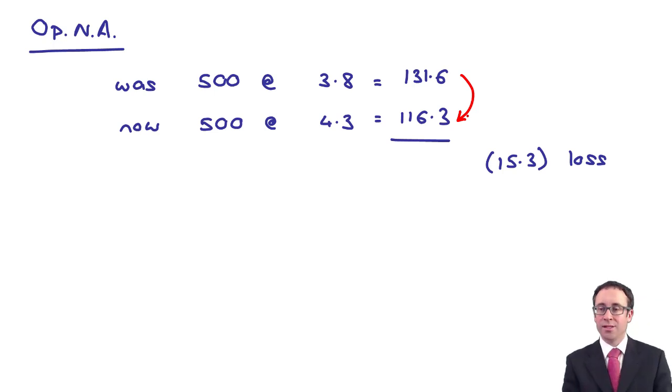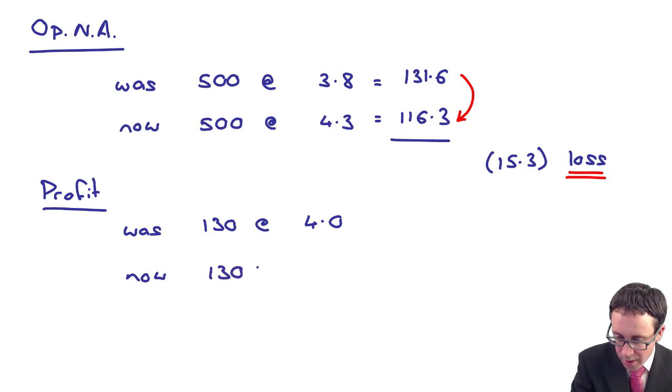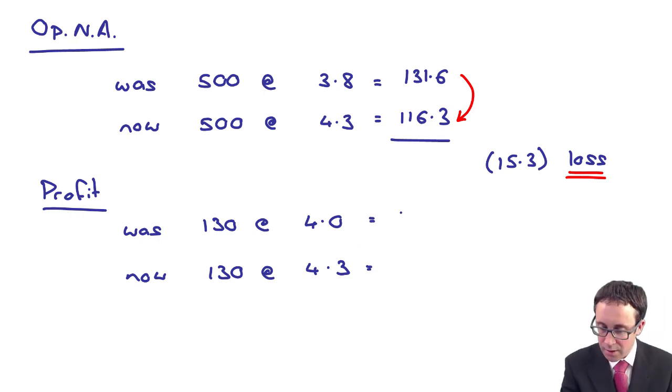So we've got 131.6, 116.3. I think that is a $15.3 million loss. Why is it a loss? It is a loss because it is a reduction in the net assets.